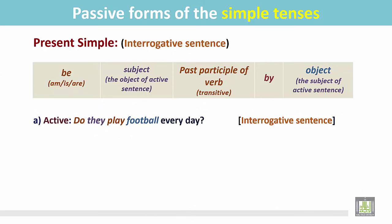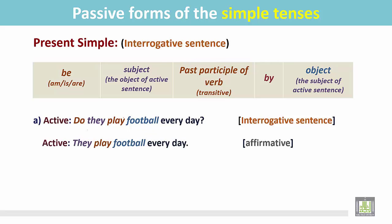See the examples. 'Do they play football every day?' It is an interrogative sentence. This is the subject, this is the transitive verb, and this is the object. First we have to change this sentence into affirmative form: 'They play football every day.' It is an affirmative sentence. After that we change this active sentence into passive.